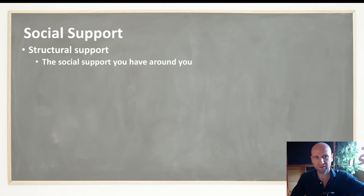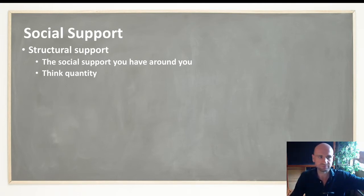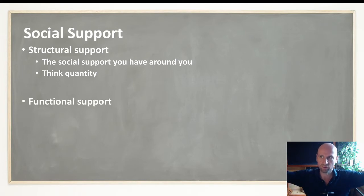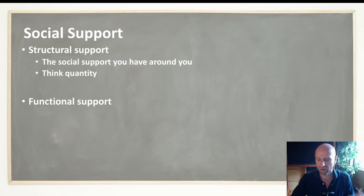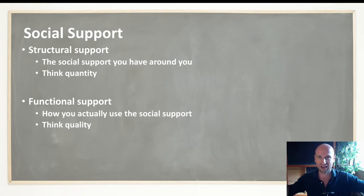Think of structure as shape — structural support is about the people and support you have around you. This is like quantity; it's the structures around you in place. For example, if you are a member of different teams, how big is your family, how often do you see people — this is the structural support you have access to. Functional support is more about how often you actually access that support — it's like the quality, how you actually use it. So structural is the support available to you; functional is how much you actually use it.